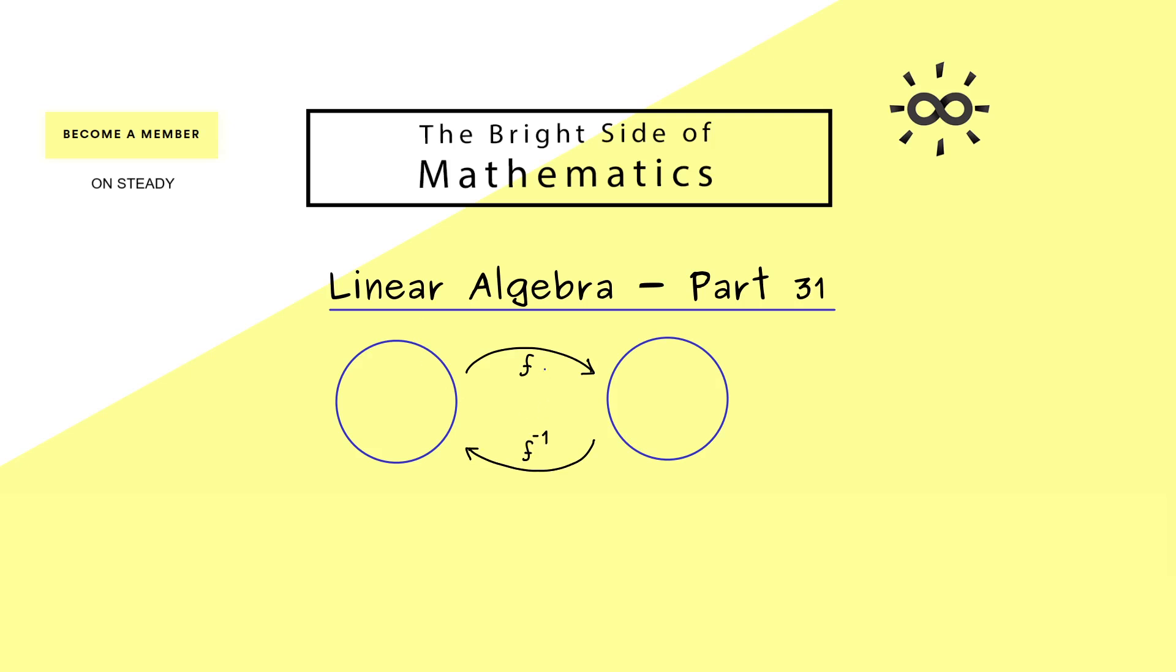And here, please recall we have already discussed that for linear maps associated to matrices. This means in the case we have a matrix B, the inverse map is given by the inverse matrix. Indeed, this is how we defined the inverse matrix.